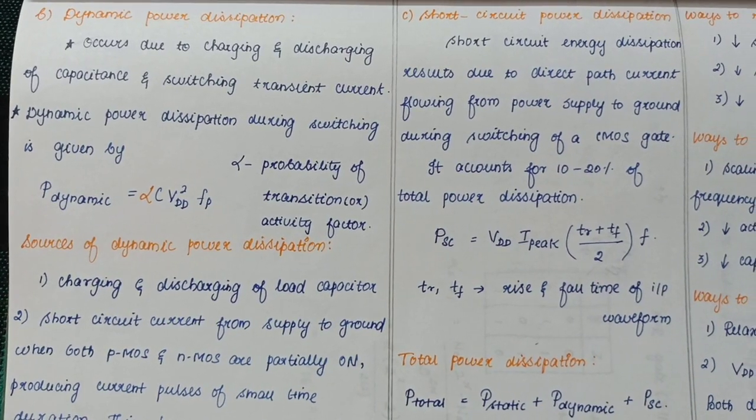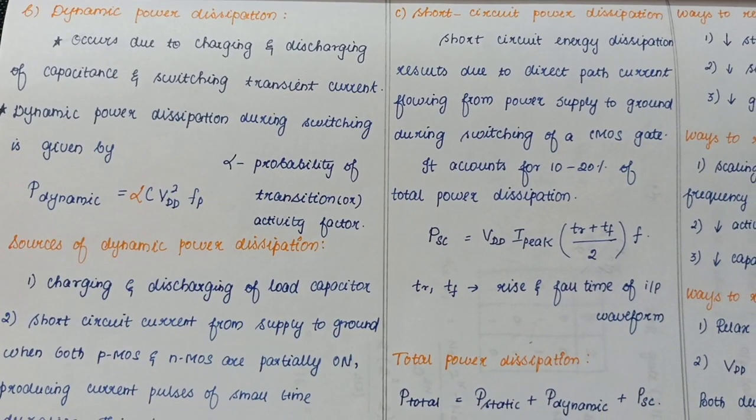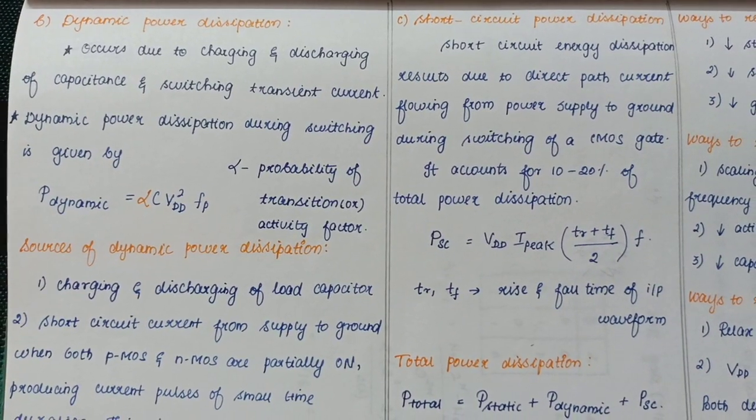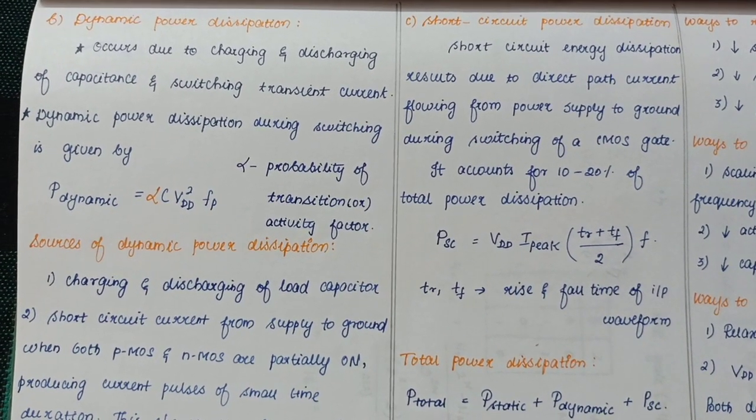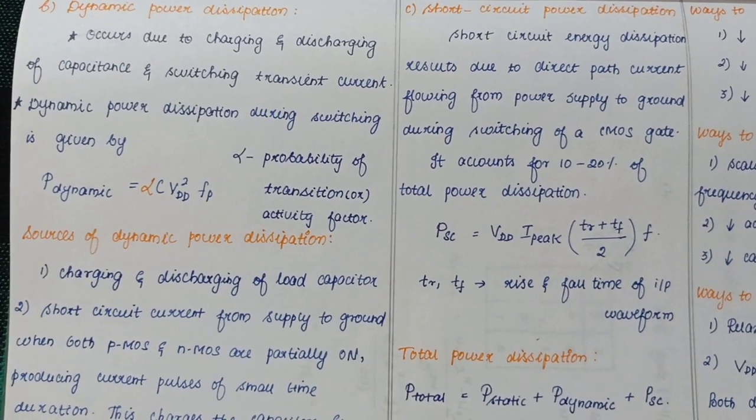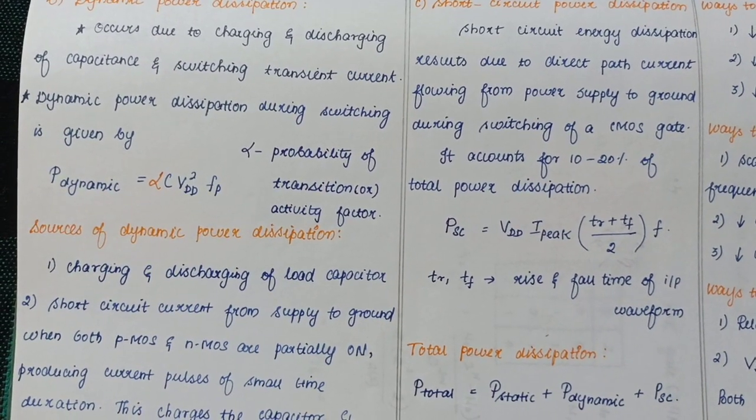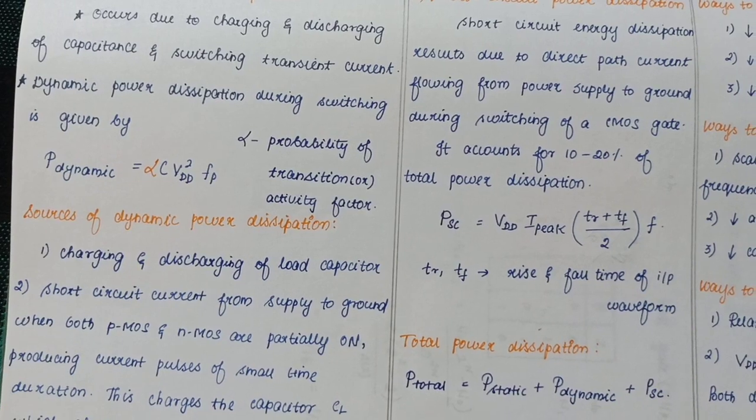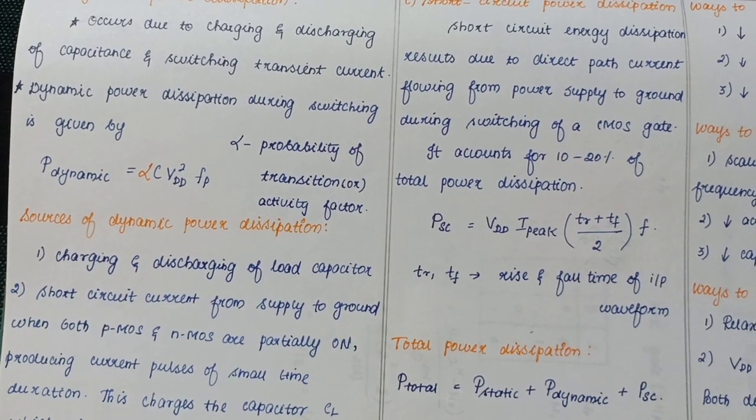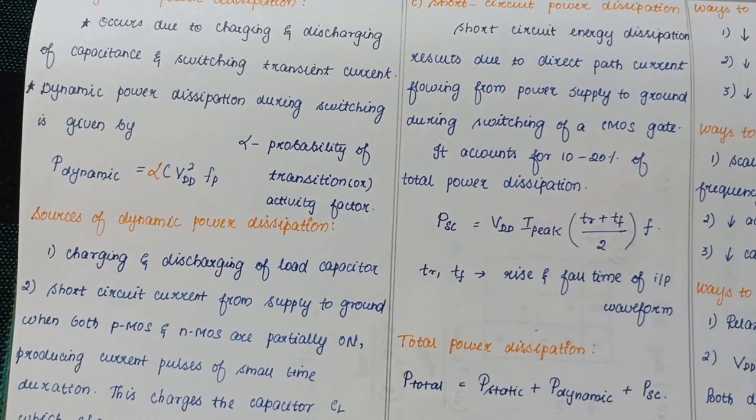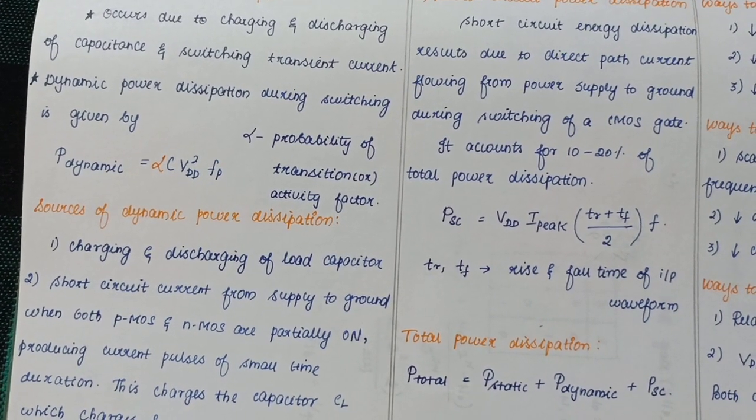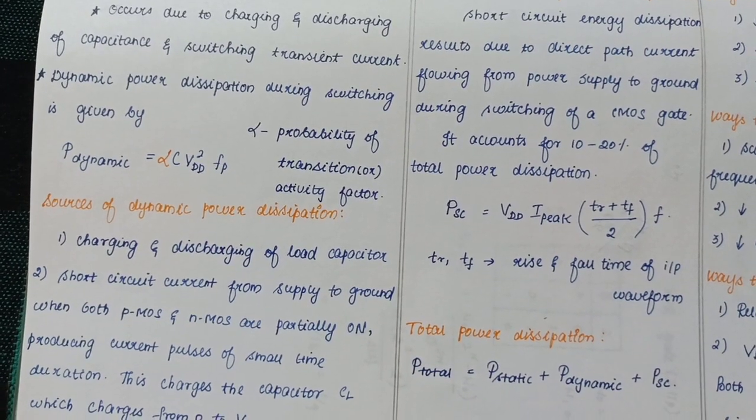Dynamic power dissipation occurs due to charging and discharging of capacitance and switching transient current. The expression is P dynamic equals Alpha C VDD square into Fp, where Alpha is the probability of transition or activity factor, C is the capacitance value, VDD is the supply voltage squared, and Fp is the switching frequency.